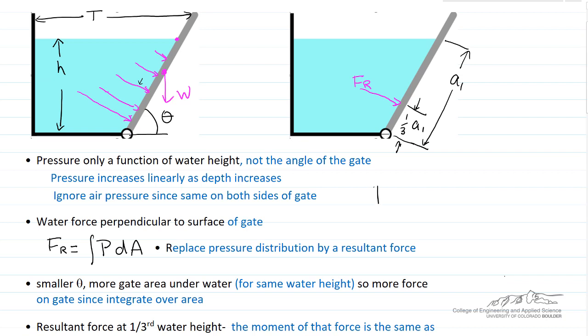The pressure is equal to the density of water, the gravitational constant, and the height of the water. Here, h equals zero at the surface, and height increases as we get deeper into the water.